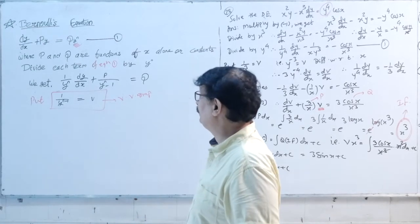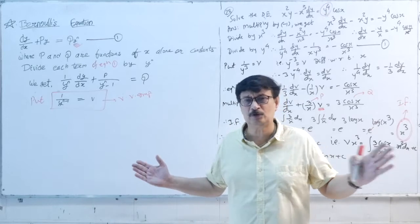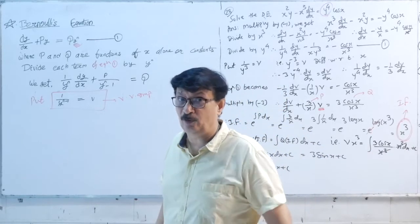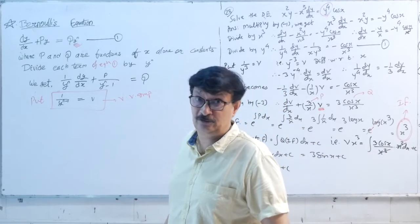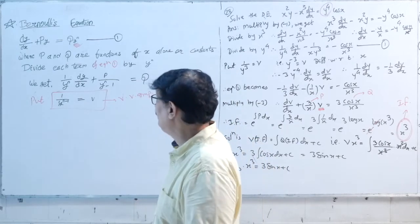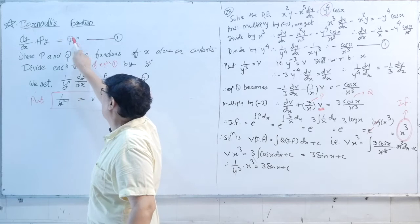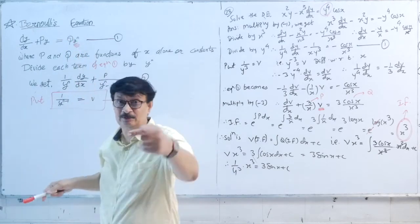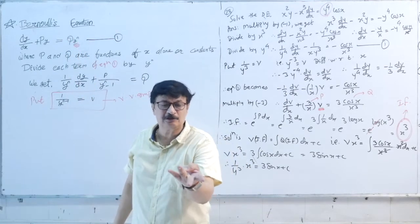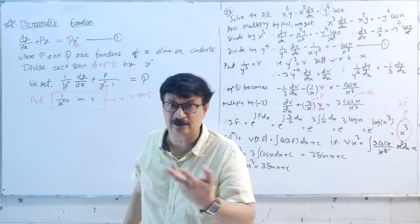Now we will go to Bernoulli's equations — a new topic which was not there in state board but is very important for JEE. The standard form is dy/dx + py = q·yⁿ. This is a Bernoulli's equation, where yⁿ means y², y³, y⁴, y⁵, etc.